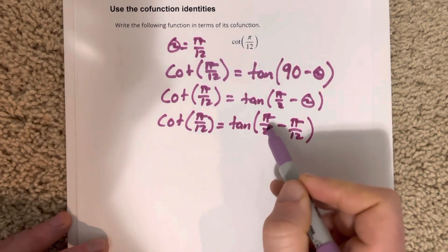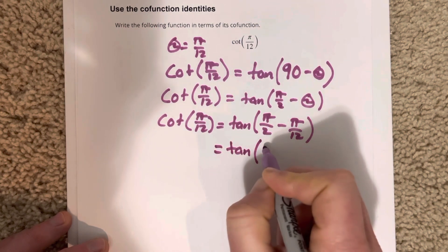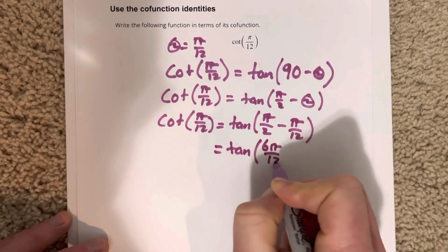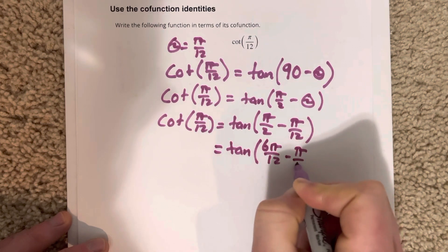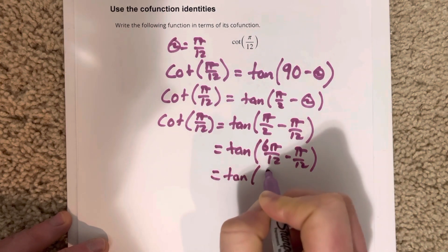Well, if I go through and I multiply the top and the bottom by 6, that's going to give me tangent of 6 pi over 12 minus pi over 12, which will be tangent of 5 pi over 12.